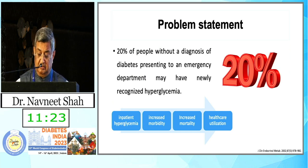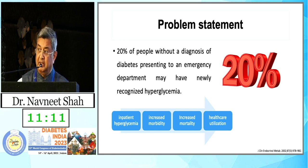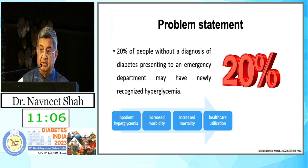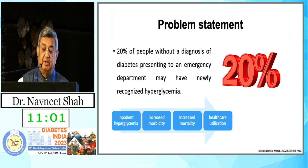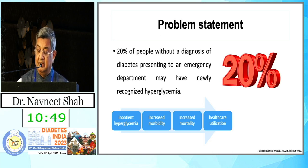As Dr. Agrawal mentioned, 20% of patients without a prior diagnosis of diabetes presenting to the emergency department may have newly recognized or first-time detected hyperglycemia. These inpatient hyperglycemia cases are associated with increased morbidity, increased mortality, and increased healthcare utilization.